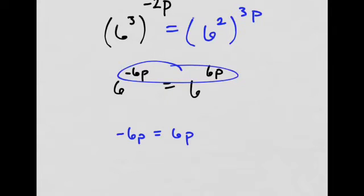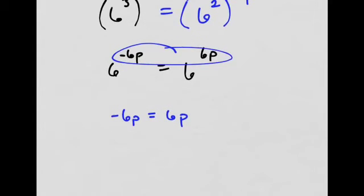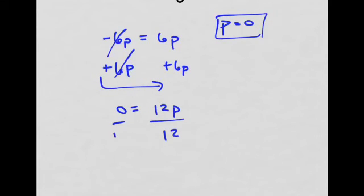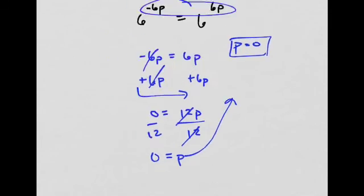Now you might be thinking, I can divide and get negative 1 equals 1, but that's wrong. Here's what you do: add 6p over. Really, you can see that 0 is the only thing that works, p equals 0. But I'm showing you the steps in case you wanted to see them. So 0 equals 12p, divided by 12, and p equals 0. That's the only thing that works.